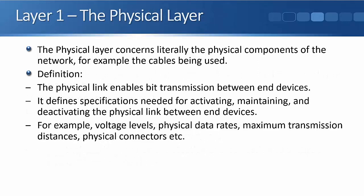Finally, we have layer one, the physical layer. This concerns literally the physical components of the network — for example, the actual physical cables being used. The definition of the physical layer: it enables bit transmission, the ones and zeros, between end devices. It defines specifications needed for activating, maintaining, and deactivating the physical link between end devices — for example, voltage levels, physical data rates, maximum transmission distances, and physical connectors.